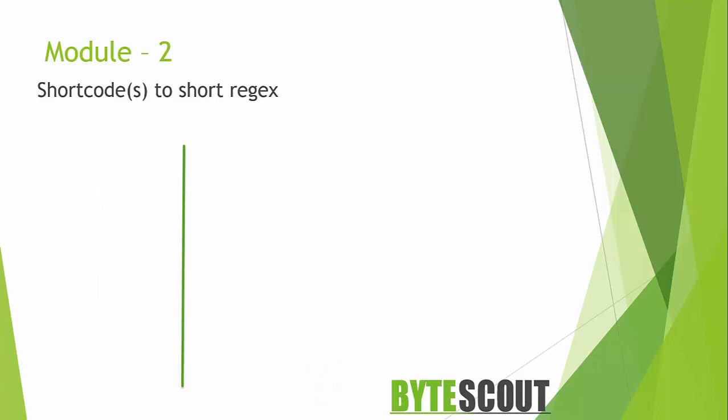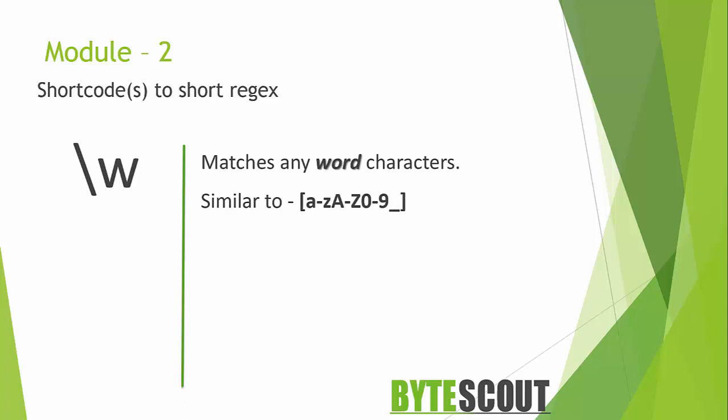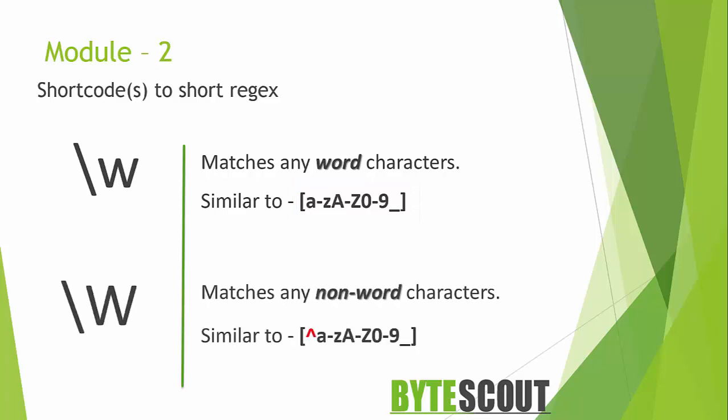The next short code meta character is backslash w, which is used to represent a word character. You might think at first that this only means alphabetical characters, but that is not quite right. In regular expressions, a word character represents anything from capital A to capital Z, lowercase a to z, digits from 0 to 9, and underscore. You can achieve the same thing using the equivalent regex. Backslash capital W does the opposite — it matches anything that is not a word character — and there is an alternate regex that does the same thing.